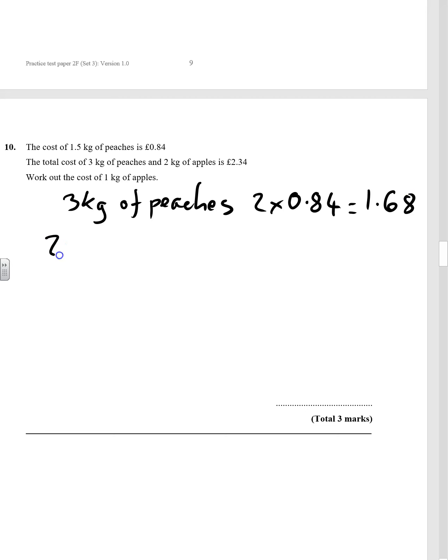So to get two kilos of apples—always write down exactly what you're doing so everyone can follow it—is going to be £2.34 minus £1.68, which gives us a total of 66p, or 0.66. But that's for two kilos.